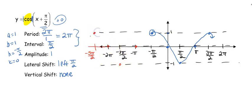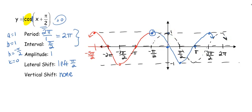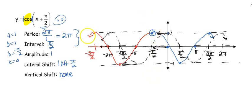We created a horizontal shift — we took the entire graph and shifted it left. Just remembering what your regular cosine graph looks like without any shifts: what we did is take that entire cosine graph and shift every point over one tick mark, which is π/2. Make sure you're circling your starting point and indicating your arrows on your graph.